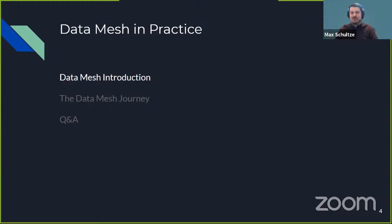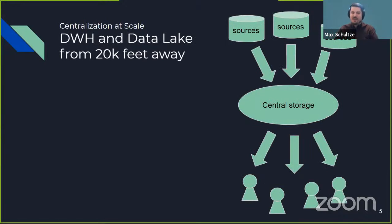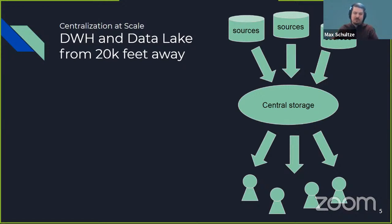Looking at a typical setup for data warehouses and data lakes from a far distance shows that it boils down to a very simple setup: in the middle, you have some central storage component — be it a relational database management system as a backend of a data warehouse, or a cloud object store as the backend of your data lake. On one side, this central storage is fed from many different sources where data is collected and centrally archived. On the other side, many users use compute engines on top of the provided data.